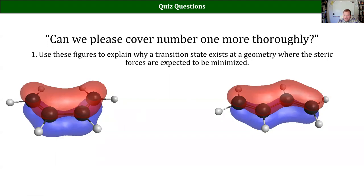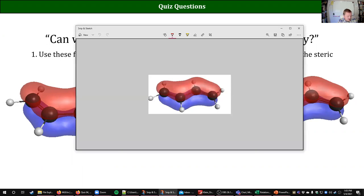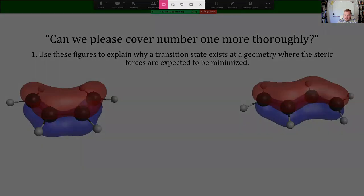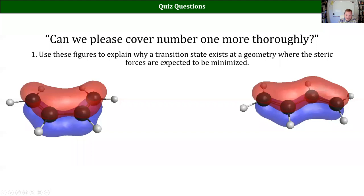Part of what this question is asking is: we expect there to be a transition state in between these two. If you start from the S-cis and you twist one of those carbons around, you're going to get a transition state where you've totally broken the resonance in between these two states. The transition state between S-cis and S-trans would look something like this.